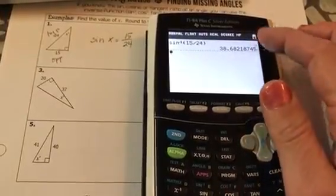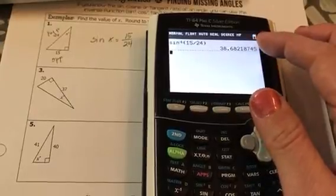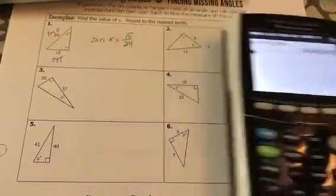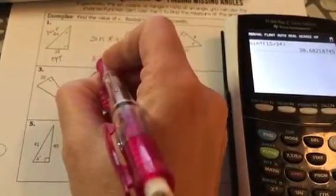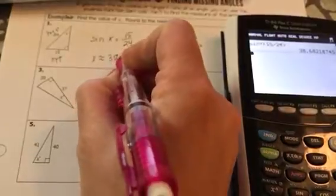Now this right here, this is the angle measure. So that's what x equals, 38.7. I'm going to round to the 10th, 38.7 degrees.